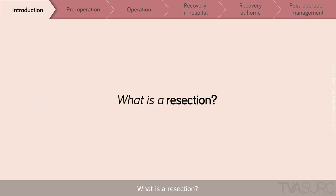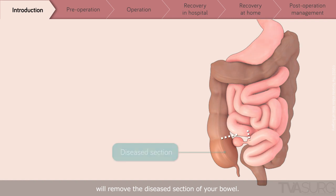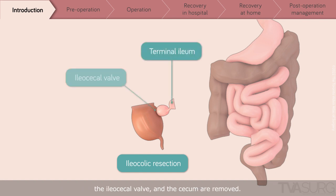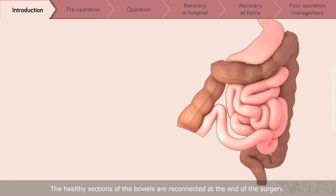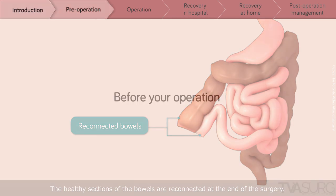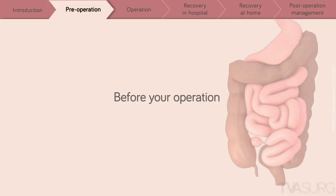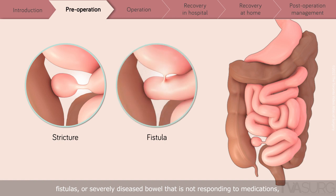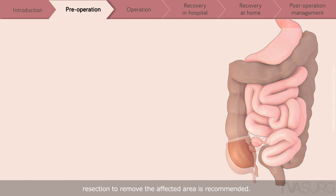What is a resection? A resection of the bowel means that the surgeon will remove the diseased section of your bowel. The most common type of surgery for Crohn's disease is the ileocolic resection, where a short part of the terminal ileum, the ileocecal valve, and the cecum are removed. The healthy sections of the bowels are reconnected at the end of the surgery. For most people with Crohn's disease who have strictures, fistulas, or severely diseased bowel that is not responding to medications, resection to remove the affected area is recommended.